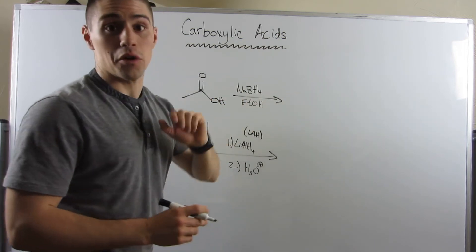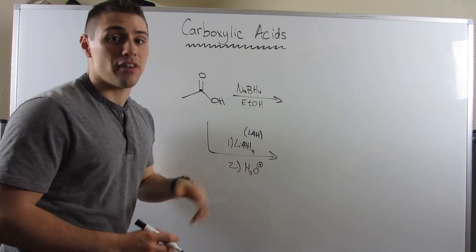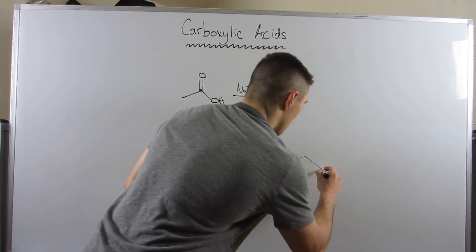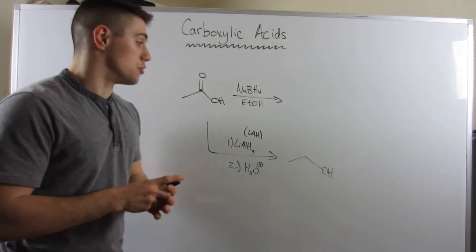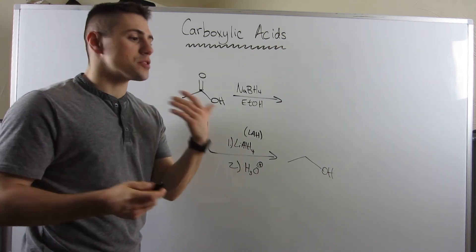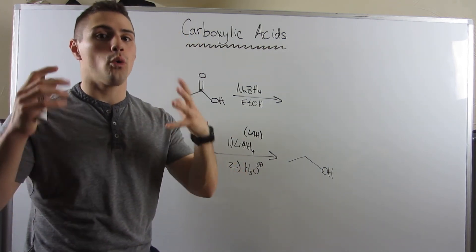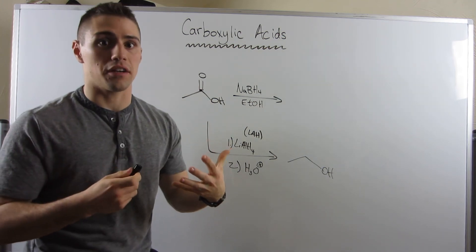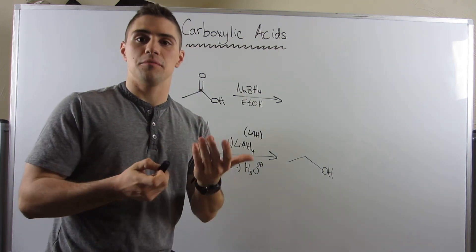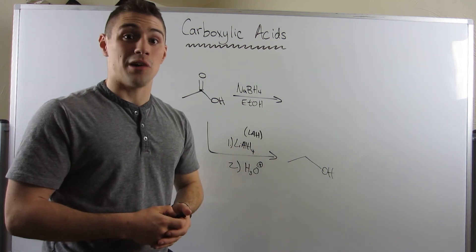Here's the catch for carboxylic acids: NaBH4 is not strong enough to reduce a carboxylic acid, so nothing happens there. However, lithium aluminum hydride (LAH) followed by acid — being very violent and very strong — can actually reduce a carboxylic acid all the way to an alcohol. So today we covered a lot of review: carboxylic acid structure, resonance, boiling points, and oxidation-reduction. See you in the next video.